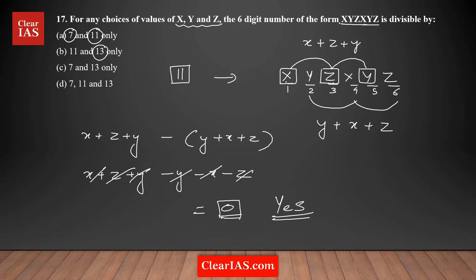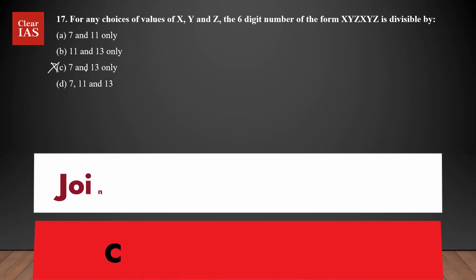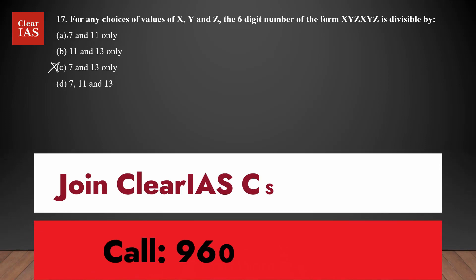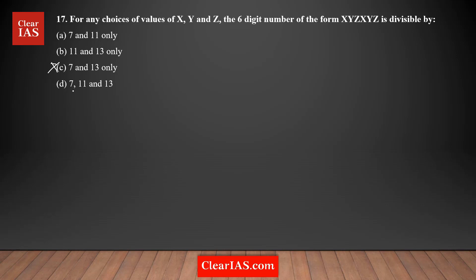Since the difference is 0, the number xyzxyz is divisible by 11. So 11 must be in the answer. Based on this, we can eliminate option C, which does not include 11. The remaining options — A, B, or D — all include 11.